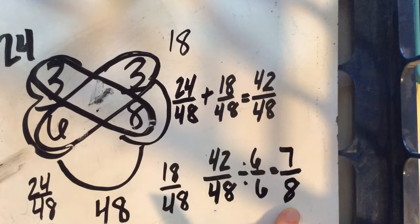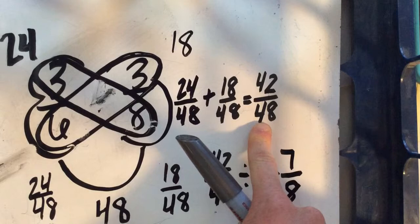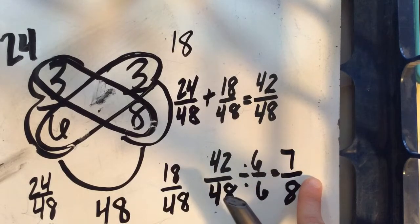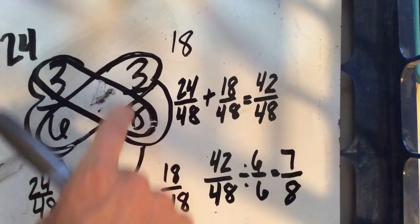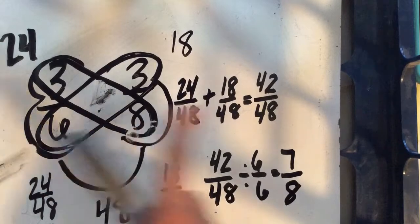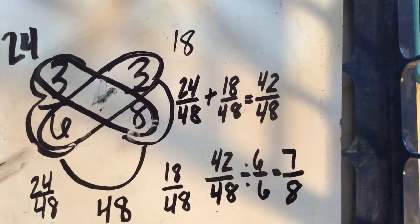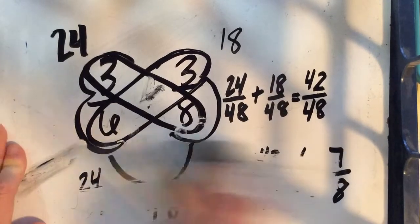So before simplifying, our answer would be 42 forty-eighths. And then when we simplify, we find an equivalent fraction for our answer. So we could say three sixths plus three eighths is either the same as 42 forty-eighths or 7 eighths. Let's do a subtraction problem just to see another example real quick.